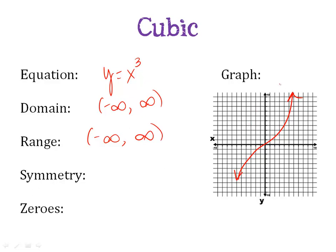For symmetry, if I folded it this way, and I folded it down across the x and the line, I would then have it match up. So that is origin symmetry. The zeros, where does it cross that axis, x-axis at zero, zero.